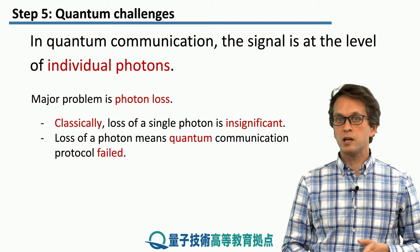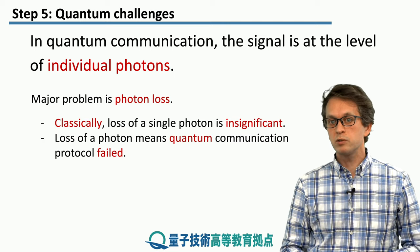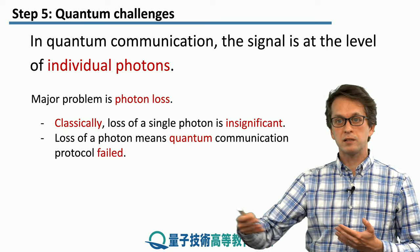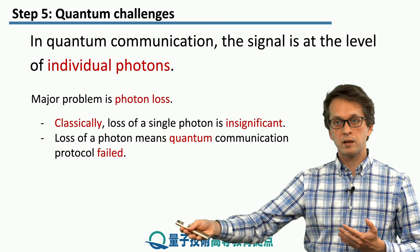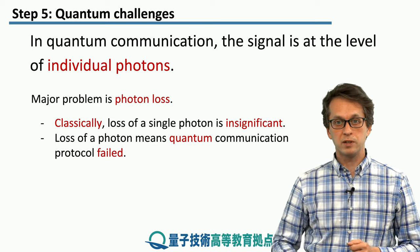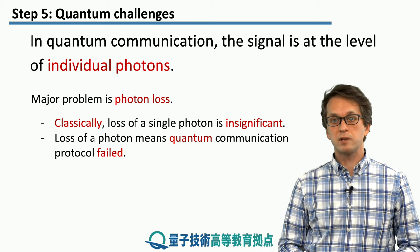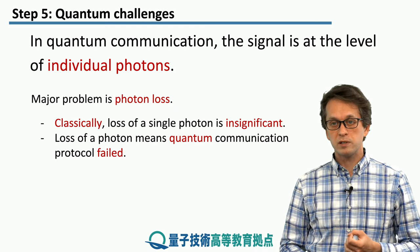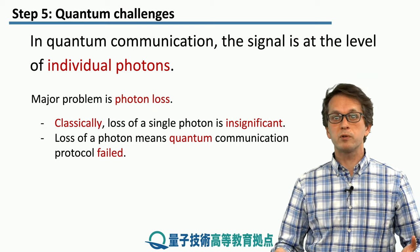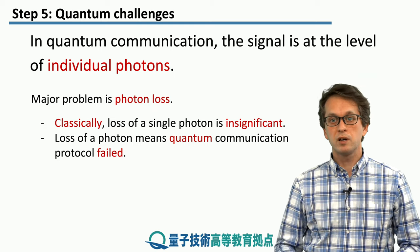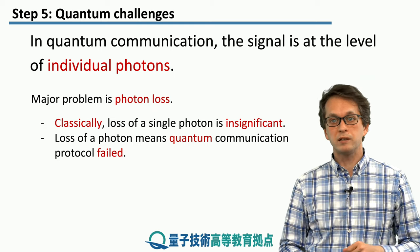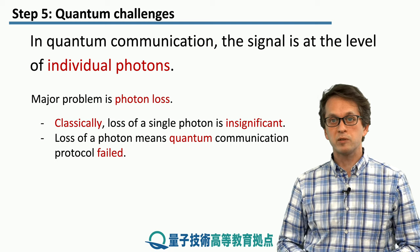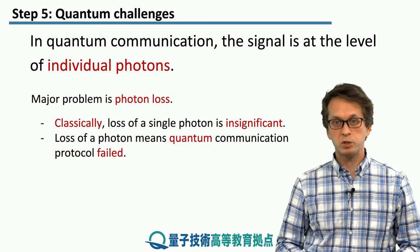Classically, if we are communicating and we lose a single photon, this is very insignificant — the whole signal propagates and we can still read it out at the output. However, when this happens in the quantum communication protocol and we lose a single photon, then the entire protocol fails. Going back to, for example, E91 or BB84, the loss of a single photon becomes a huge problem.